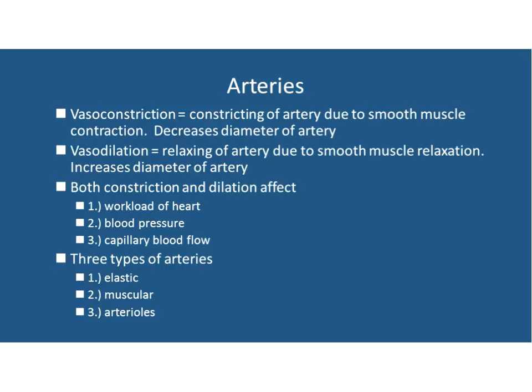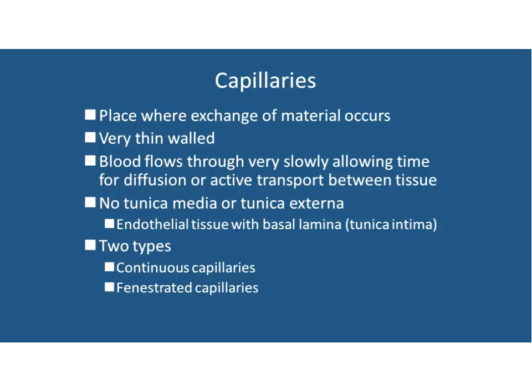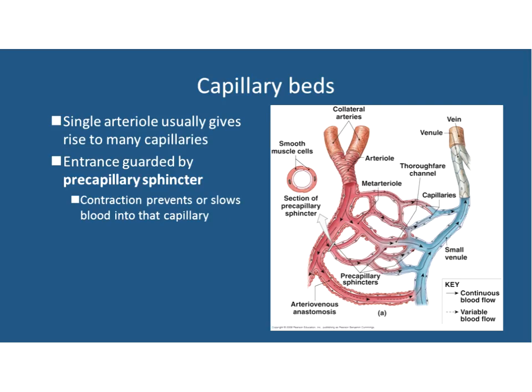To summarize arteries: they vasoconstrict and dilate, and by doing so affect afterload - how much ESV remains in the ventricle. They affect the blood pressure of the system and they affect flow to downstream tissues by letting more or less blood into an organ. Capillaries have two types: continuous and fenestrated. You get down to no tunica media and very little tunica externa - just a little basal lamina - except in the brain, which has an additional layer of astrocytes forming a second kind of barrier to protect neurons from inappropriate molecules exiting the blood.